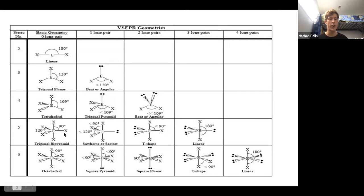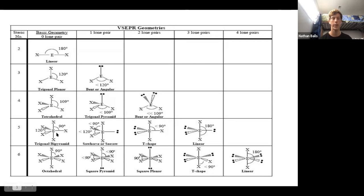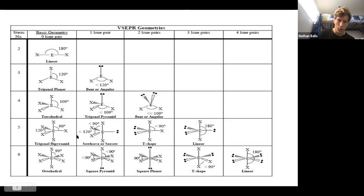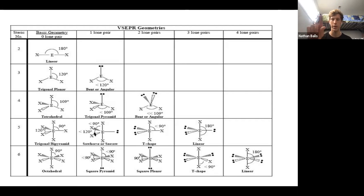Once we get to steric number five, we have trigonal bipyramidal — it makes two separate pyramids if you cut the central atom in half. The next option is sawhorse or seesaw, when you have one lone pair with steric number five. It's called seesaw because if you look at it sideways it can teeter-totter back and forth.